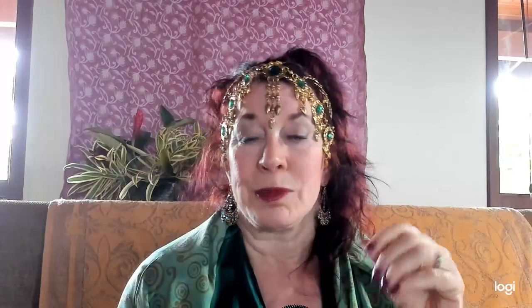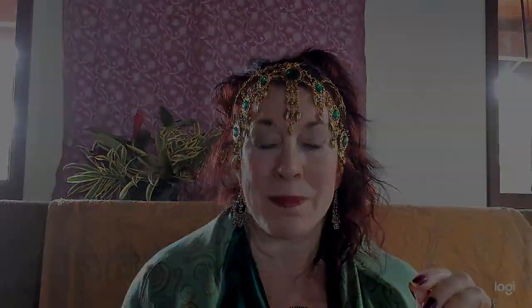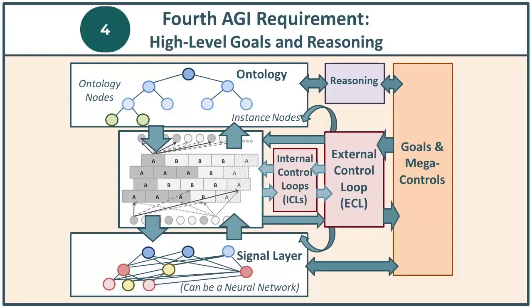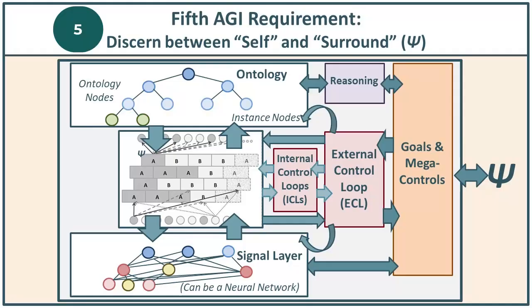So let's run through those quickly again. For AGI you're going to have to have: number one, interaction with the ontology layer; number two, feedback mechanisms both coming down from the ontology layer and coming up from the connectionist or signal processing level; third, control loops — control over these processes; fourth, a goal-setting capability or sense of purposefulness that can be very complex; and fifth, a boundary — a sense of differentiation between self and other. Five components: AGI.